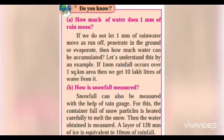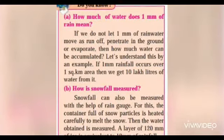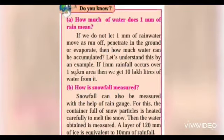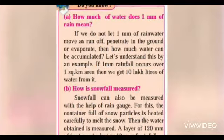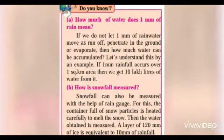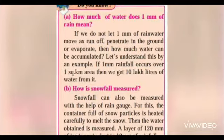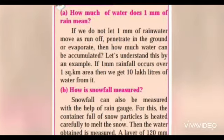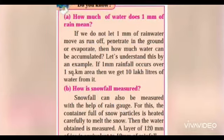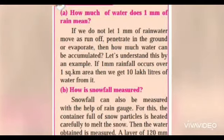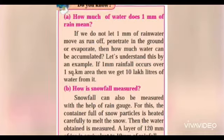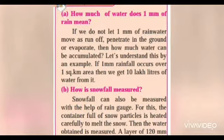How much water does 1 millimeter of rain mean? If we do not let 1 millimeter of rain move as runoff — that is, if we let it penetrate into the ground or evaporate rather than flow away — then how much water can be accumulated? For example, if 1 millimeter of rainfall occurs over 1 square kilometer area, we get 10 lakh liters of water from it.